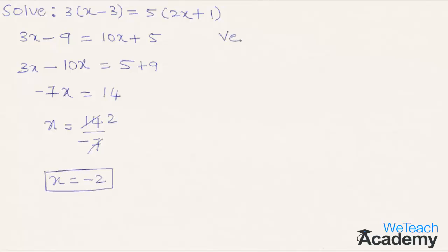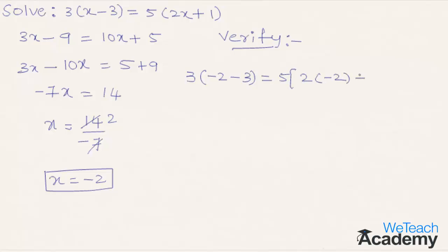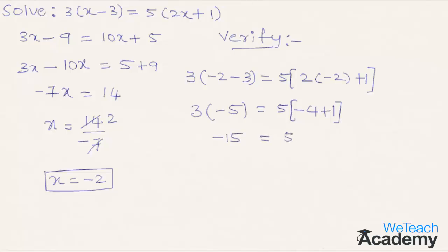Now let us verify the result by substituting x equal to minus 2 in the equation. Substituting gives 3 into minus 2 minus 3 equal to 5 into 2 into minus 2 plus 1. On the left hand side, minus 2 minus 3 is minus 5, so 3 into minus 5 is minus 15. On the right hand side, 2 times minus 2 is minus 4, plus 1 is minus 3, so 5 into minus 3 is minus 15.